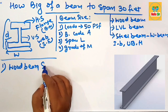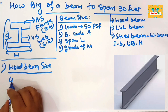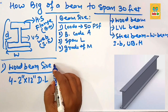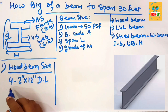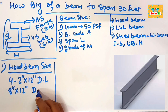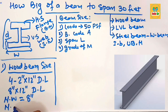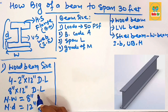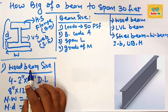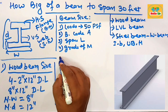For wood beam size required to span 30 feet, you can take four pieces of 2-inch by 12-inch dimensional lumber, which can also be written as 8-inch by 12-inch dimensional lumber. The nominal width of the beam is 8 inches and the nominal depth is about 12 inches. For a 30-foot span, you can use four pieces of 2×12 dimensional lumber as the wood beam.